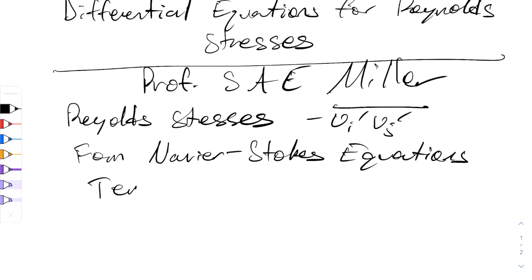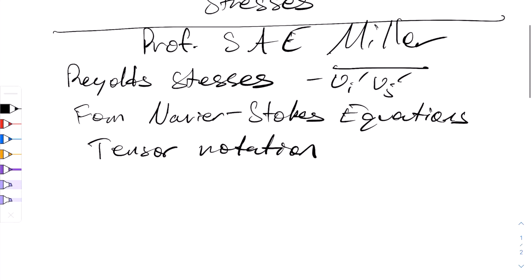So to derive the Reynolds stress equations, we need to use tensor notation. With this, we'll have x coordinates x1 equals x, x2 equals y, and x3 equals z. Note how I wrote z here.